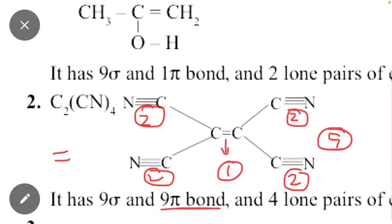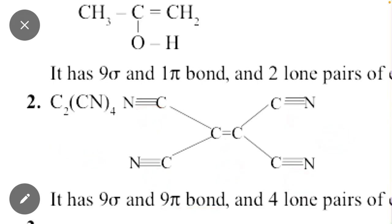Because if double bond then 1 pi, if triple bond then 2 pi bonds. So C2CN4, 9 sigma bonds and 9 pi bonds.